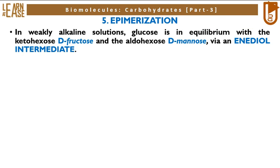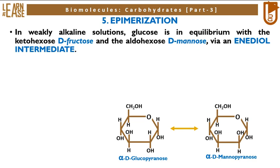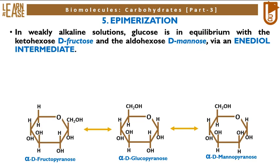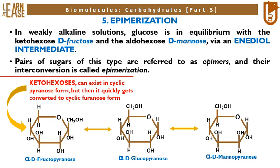The fifth reaction is epimerization. In weakly alkaline solutions, glucose is in equilibrium with the ketohexose D-fructose and the aldohexose D-mannose via an enediol intermediate. The reaction shows conversion of alpha-D-glucopyranose to alpha-D-mannopyranose and alpha-D-fructopyranose. Pairs of sugars of this type are referred to as epimers, and their interconversion is called epimerization. Importantly, ketohexoses can exist in cyclic pyranose form, but then quickly convert to cyclic furanose form — so alpha-D-fructopyranose (six-membered ring) converts to alpha-D-fructofuranose (five-membered ring).